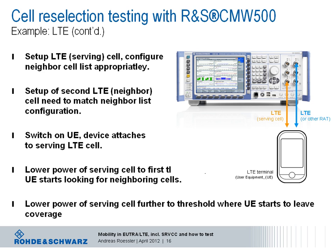Second, set up another LTE cell that matches one of the configured neighbors broadcast in the system information. Then switch on the UE. The UE attaches to the serving cell and reads the system information, knowing which neighboring cells to monitor. Then lower the power of the serving cell to reach the threshold, making the UE start looking for neighboring cells. The last step is to lower the power further to reach the thresholds where the UE would start performing cell reselection to, for instance, LTE.